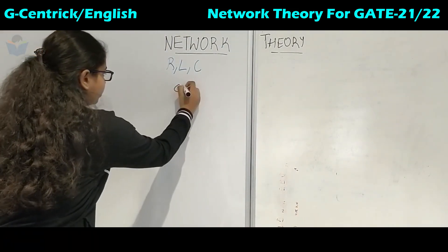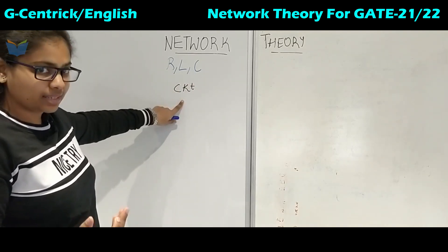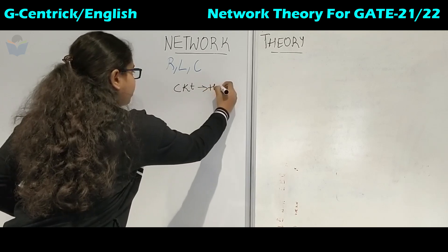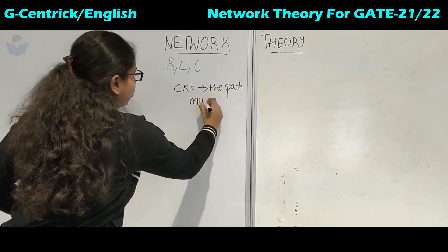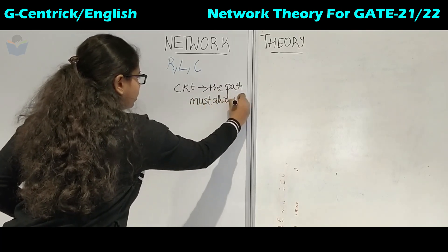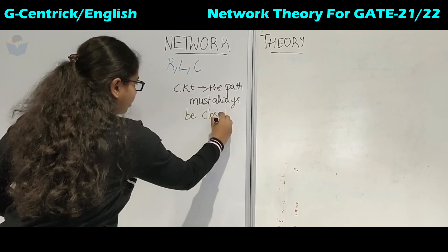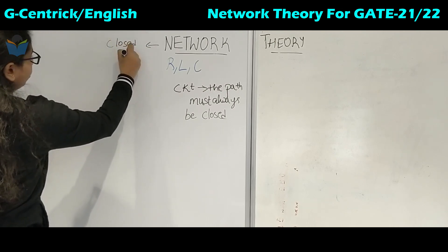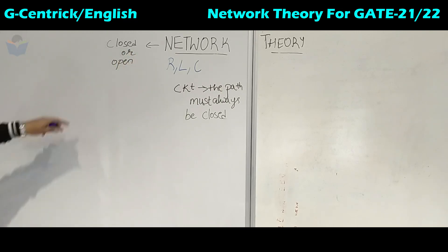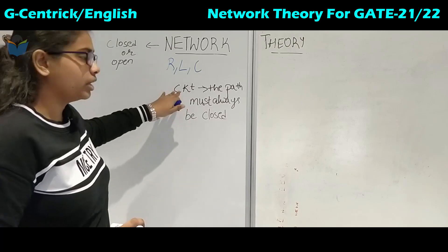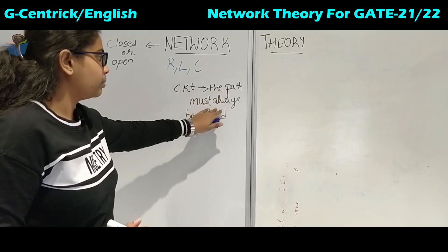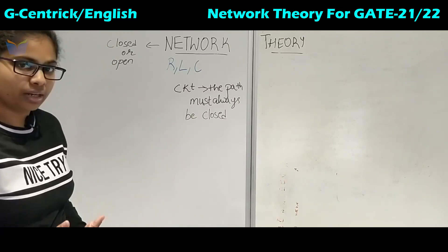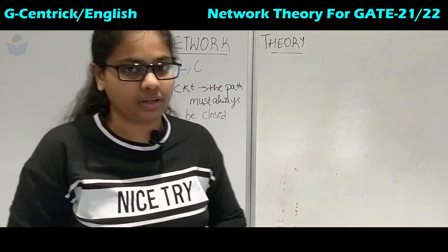Now the term 'circuit' — it has the same definition as network, the interconnection of electrical elements. But the only difference is that the path must always be a closed path. Whereas for a network, the path can either be closed or open. This is the fundamental difference: the interconnection of electrical elements where the path must always be closed is defined as a circuit. This is important because when current leaves a terminal, it has to return to the same terminal — it must have a return path.